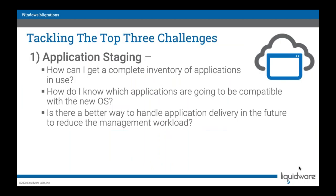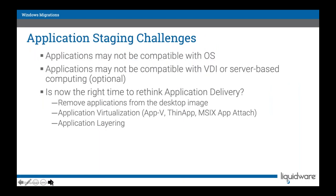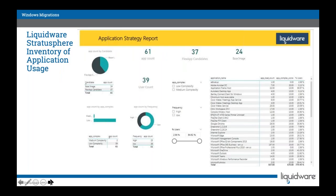Application staging: questions that come up include how do I know what I have today, which applications are in use, and is there a better way to handle applications to make them more dynamic? You need to know what applications are in use, which might not be compatible with the new OS, and which may be compatible with the virtual desktop environment going forward. Is now the right time to rethink your application delivery — should you try AppV, ThinApp, MSIX, AppAttach, or FlexApp from Liquidware? Knowing what you have today is very important, and we can do that with Liquidware Stratosphere.